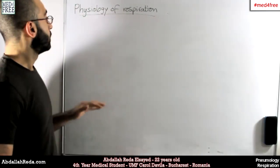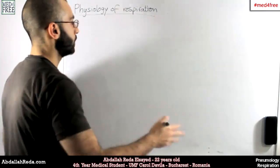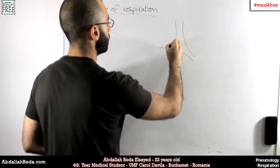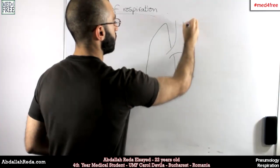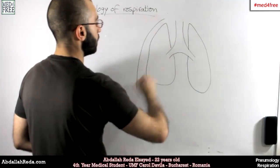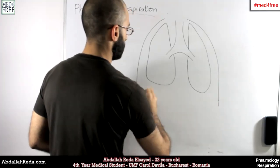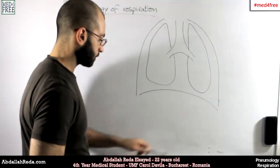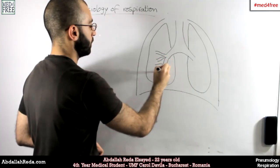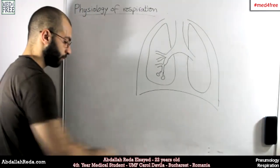Hey everyone and welcome back. Today we're going to talk about the physiology of respiration. So we're going to start by drawing the lungs. We have the trachea, the bronchi, and we have the lungs — the ribcage and the diaphragm — and then we have the respiratory tree.